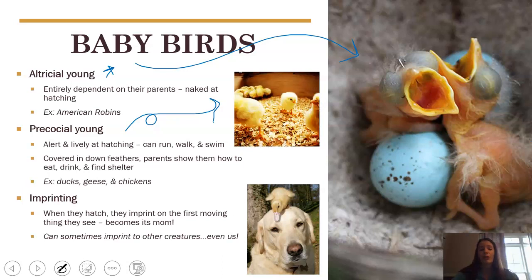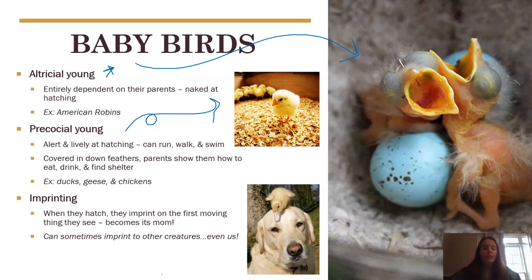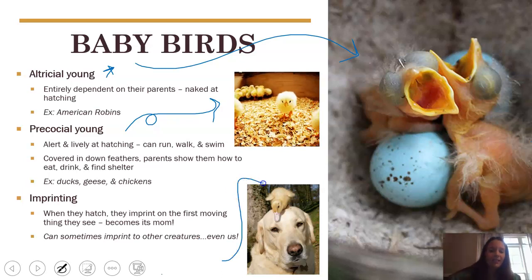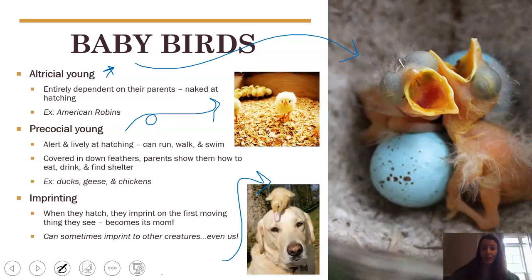Precocial young's parents still have to show them how to eat and drink. Imprinting is something really cool that baby birds do — it essentially helps make sure they always know who their mother is. They usually imprint on the first moving thing they see, which becomes their mom. Although sometimes, as we see here, a duckling may imprint on a dog and think it's its mom.